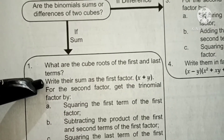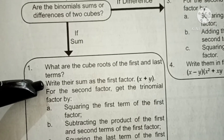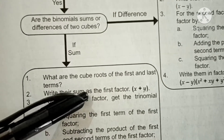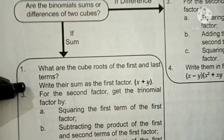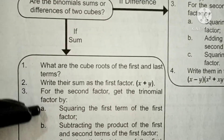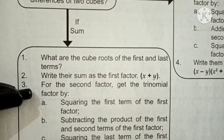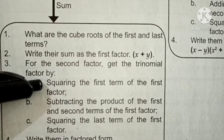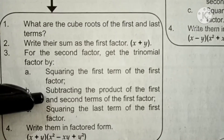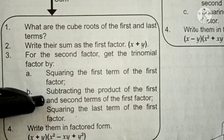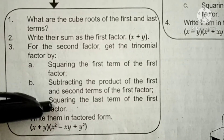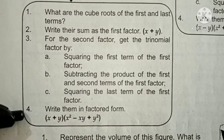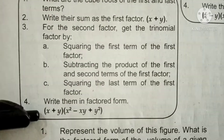Second step: write their sum as the first factor — previously it was 'write their difference,' now it is 'write their sum.' Third, for the second factor, get the trinomial factor by squaring the first term of the first factor, subtracting the product of the first and second terms of the first factor, and squaring the last term of the first factor. Then last, write them in factored form.